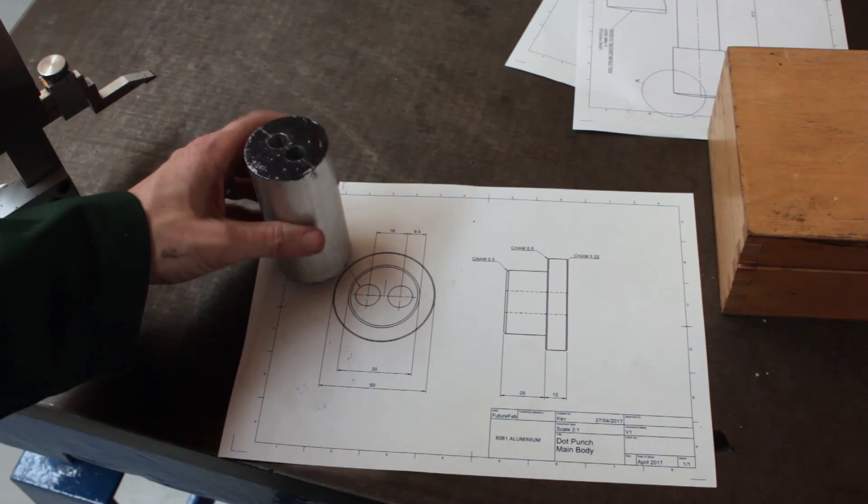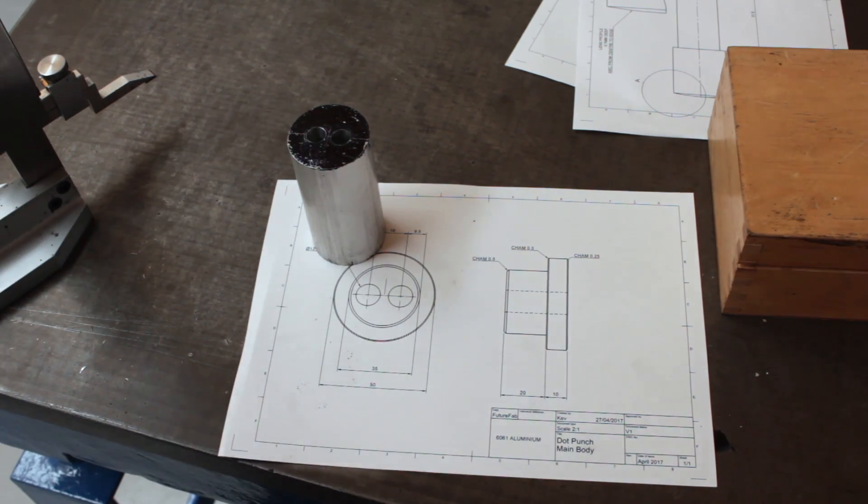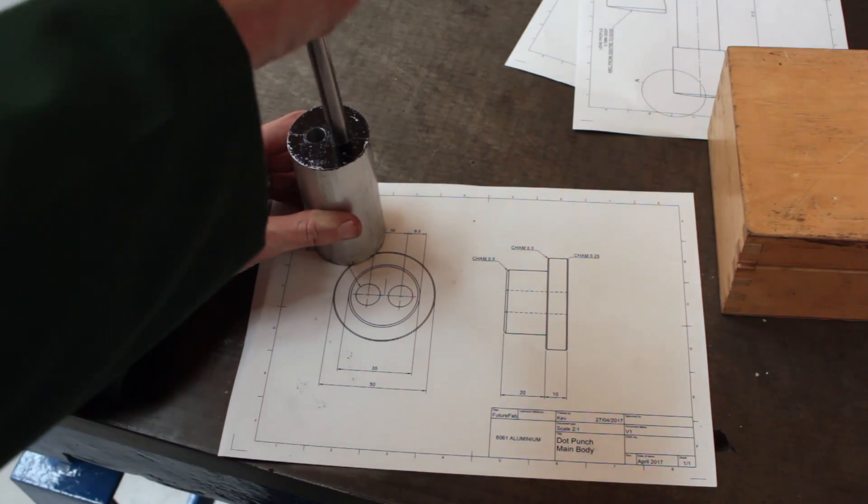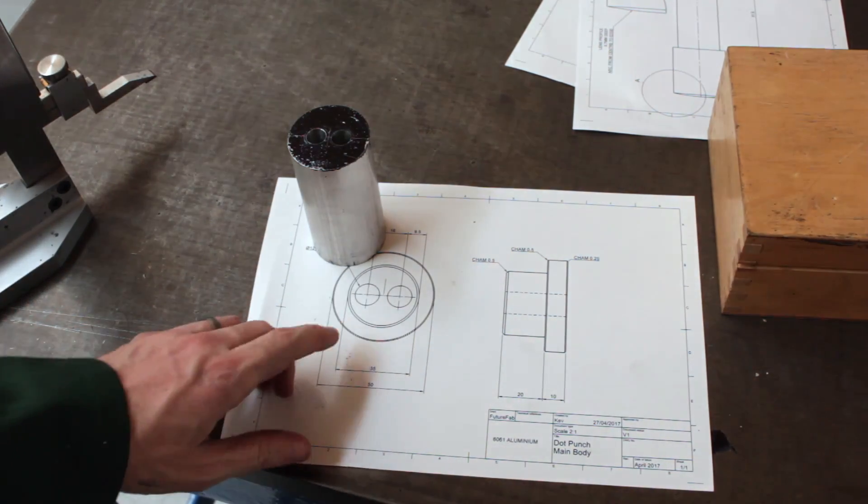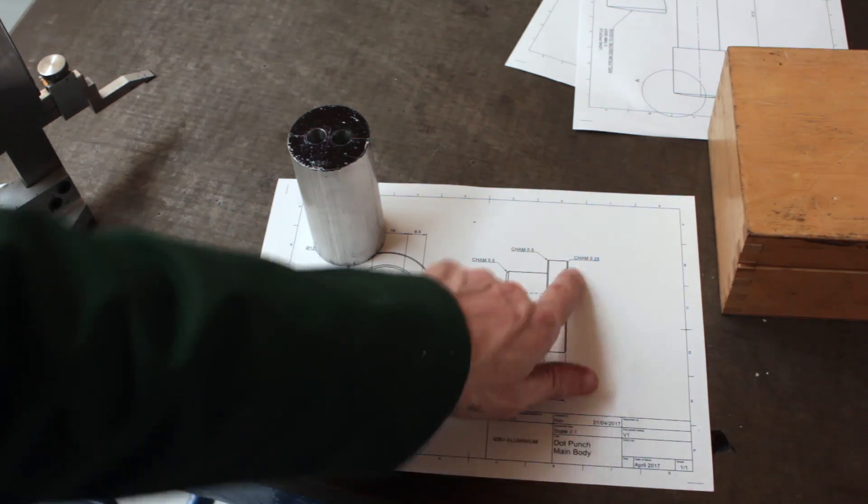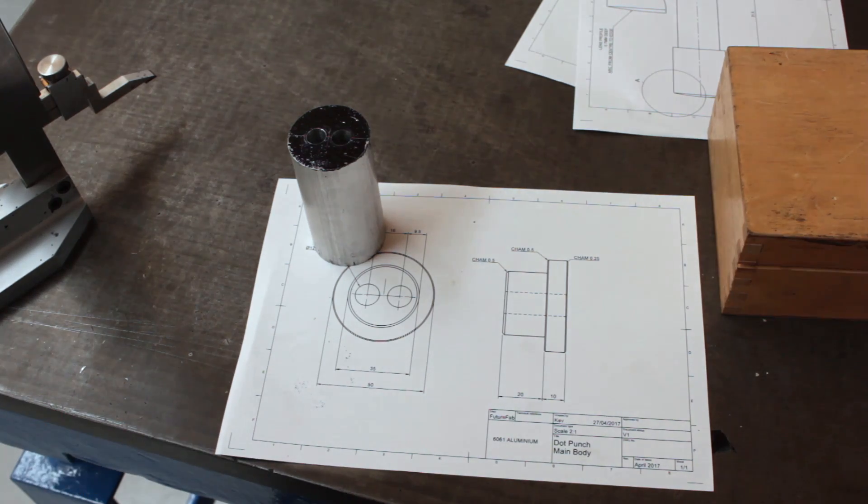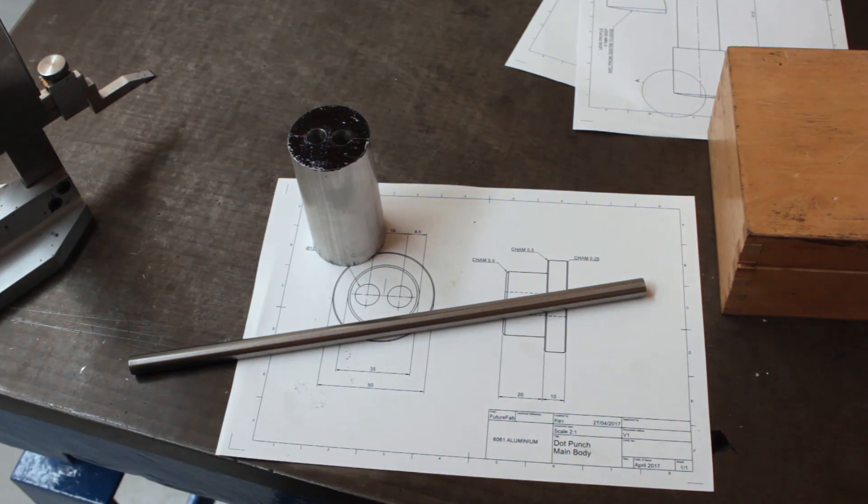So now we've done all the drilling, reaming and marking out, we've got our two holes and a lovely reamed fit - listen to that pop. We're going to head over to the lathe now and turn this diameter part off, put some chamfers on, and then in next week's video we'll be turning this into the actual punch itself.